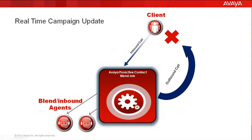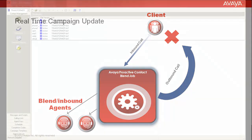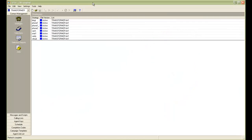On the screen is a similar example where you see a client making a call into the inbound. This inbound call is handled by a blend or an inbound agent logged into a blend job running on the Proactive Contact. The agent then takes the necessary details on the phone from the client online and marks his record uncallable on the outbound calling list so that this client is not called from the outbound calling list.